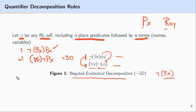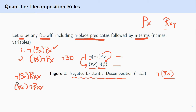One more example. Let's say we had ¬∃xRxx — a two-place predicate R. Applying negated existential decomposition would give us ∀x¬Rxx. Essentially, all we're doing with negated existential decomposition is replacing one formula with one that's equivalent to it — simply swapping out ¬∃x with ∀x and negation, while leaving Rxx alone.